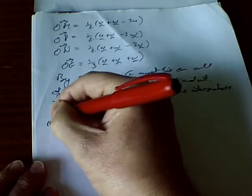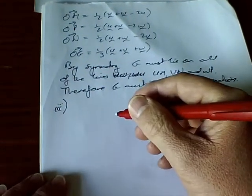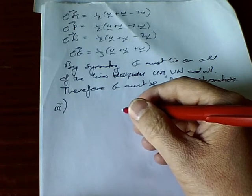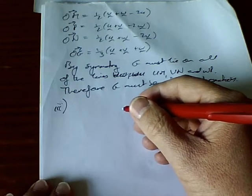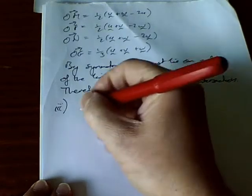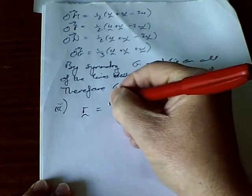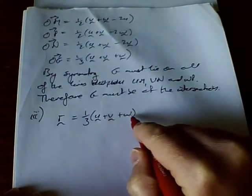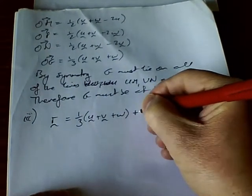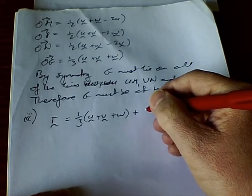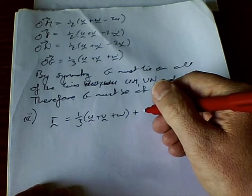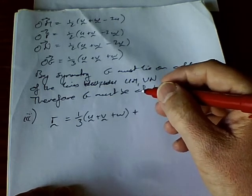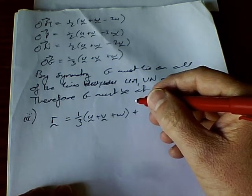Part three: write down in the form r = a + tb the equation of the line through G which is perpendicular to the plane UVW. It's not necessary to simplify the expression for b. So we've got a line going through G, so the first thing we can write down is the position vector of G, which is a third of (u + v + w). Then we need a direction for this line — and what we know is it's perpendicular to the plane UVW. To get a vector that's perpendicular, we need to do a cross product of two vectors known to be in the plane.